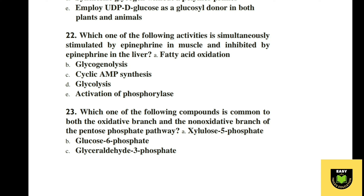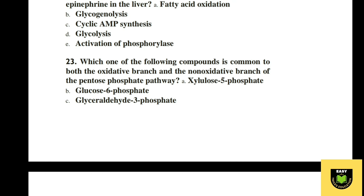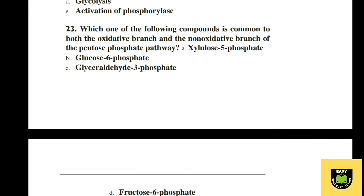Question 22. Which of the following activities is simultaneously stimulated by epinephrine in muscle and inhibited by epinephrine in the liver? A fatty acid oxidation, B glycogenolysis, C cyclic AMP synthesis, D glycolysis, E activation of phosphorylase. The correct option is D, glycolysis.